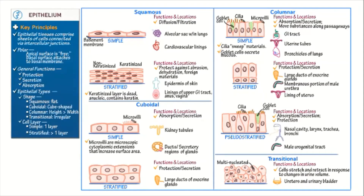This image summarizes the function and location of the different types of epithelial tissues. For this video, our main focus is to classify them according to their shape. Their functions will be discussed more when we cover different organs and organ systems.